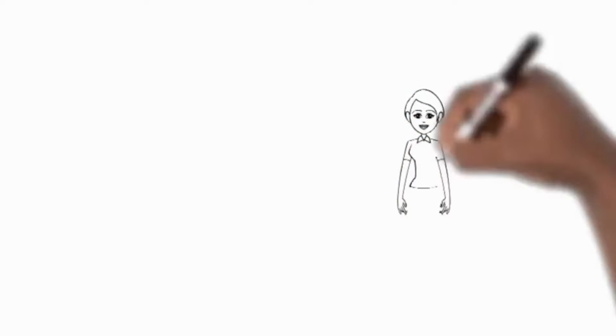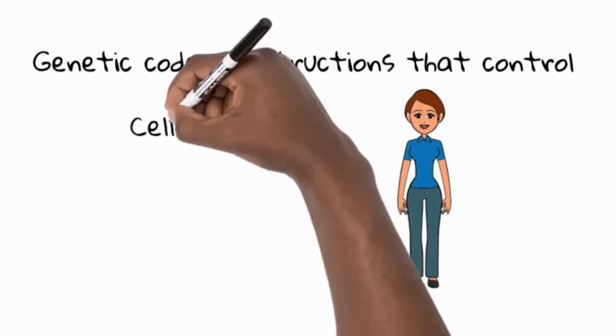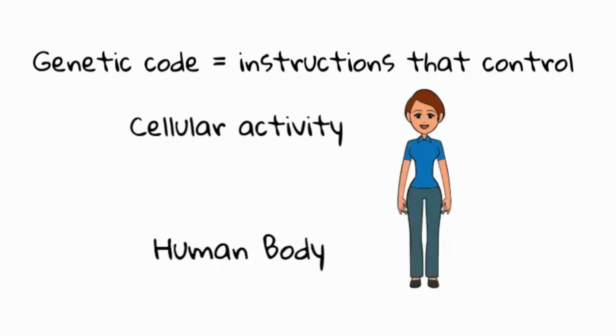What are genes? Genes or genetic codes are instructions which control cellular activity and to a larger extent the functions of the human body.